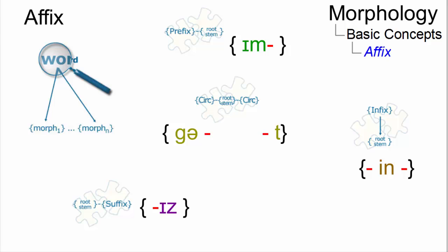Affixes are morphs that can be used only when added to other morphs. Thus, affixes are bound morphs. They are generally classified into four types depending on their position with reference to the base.